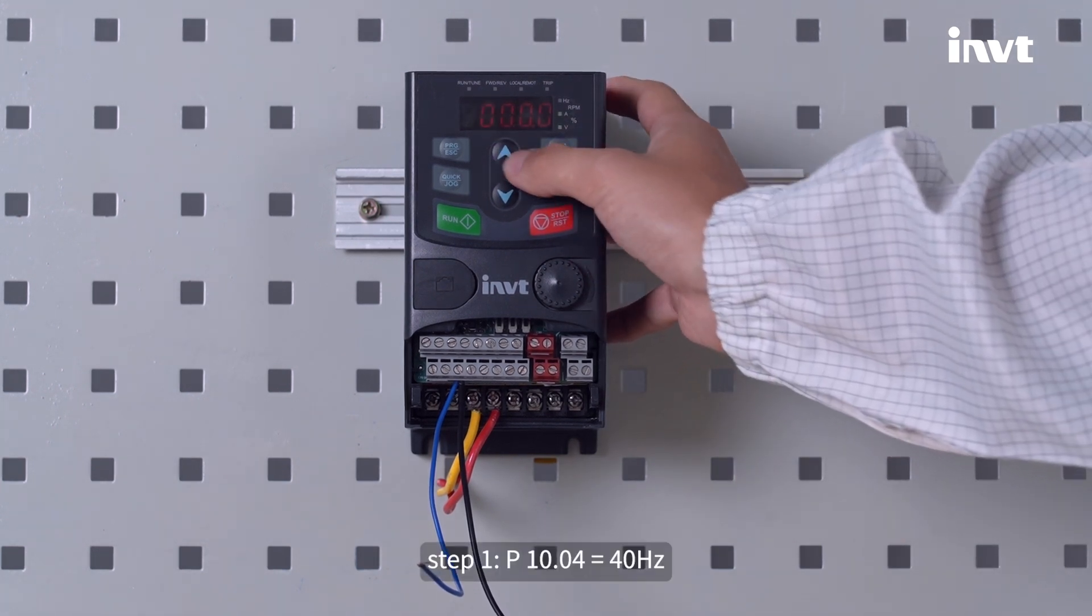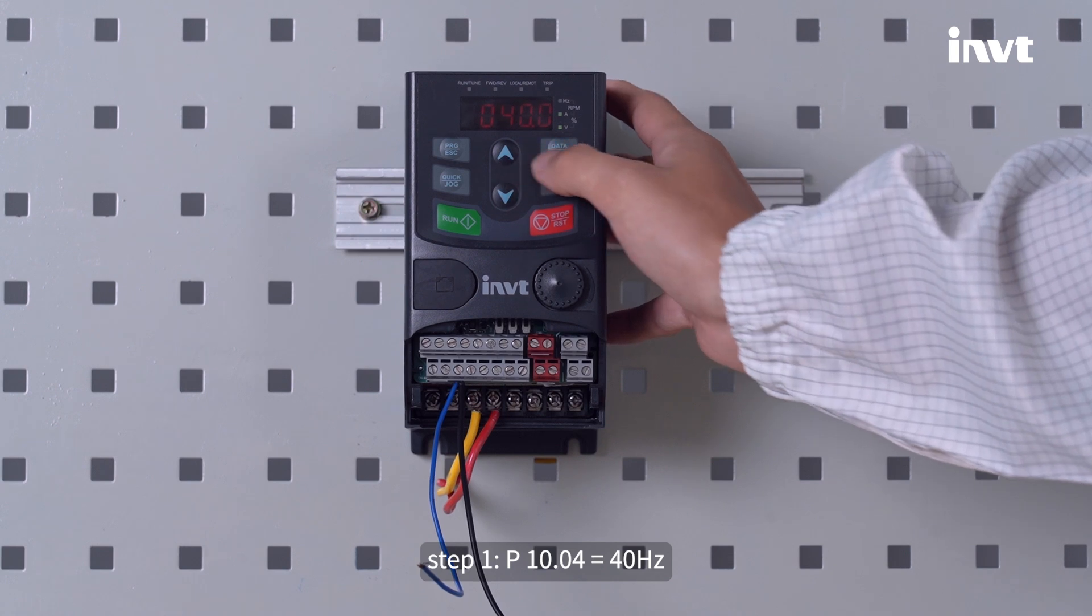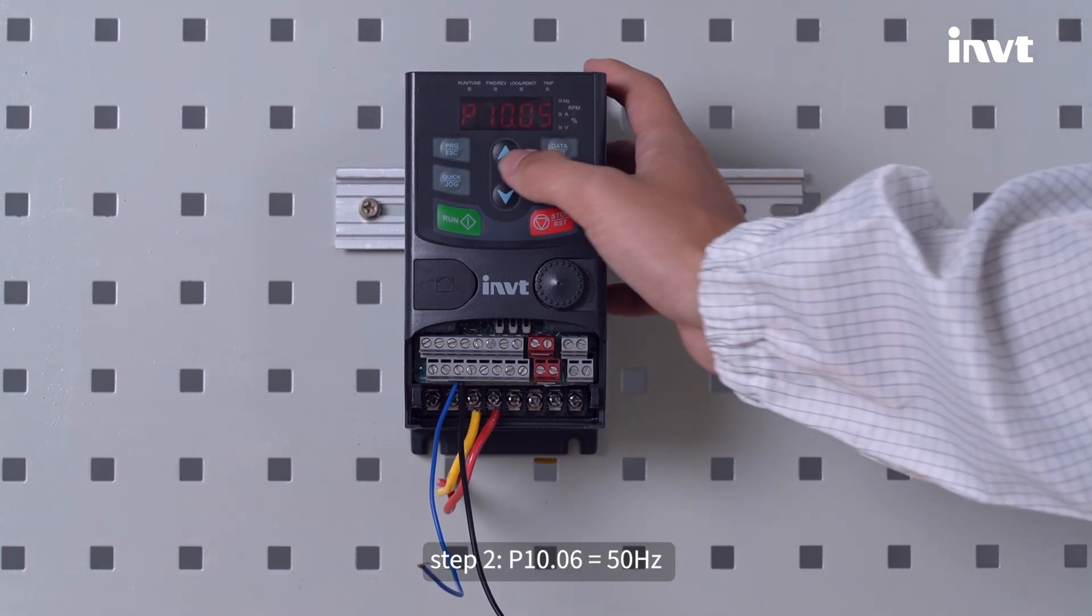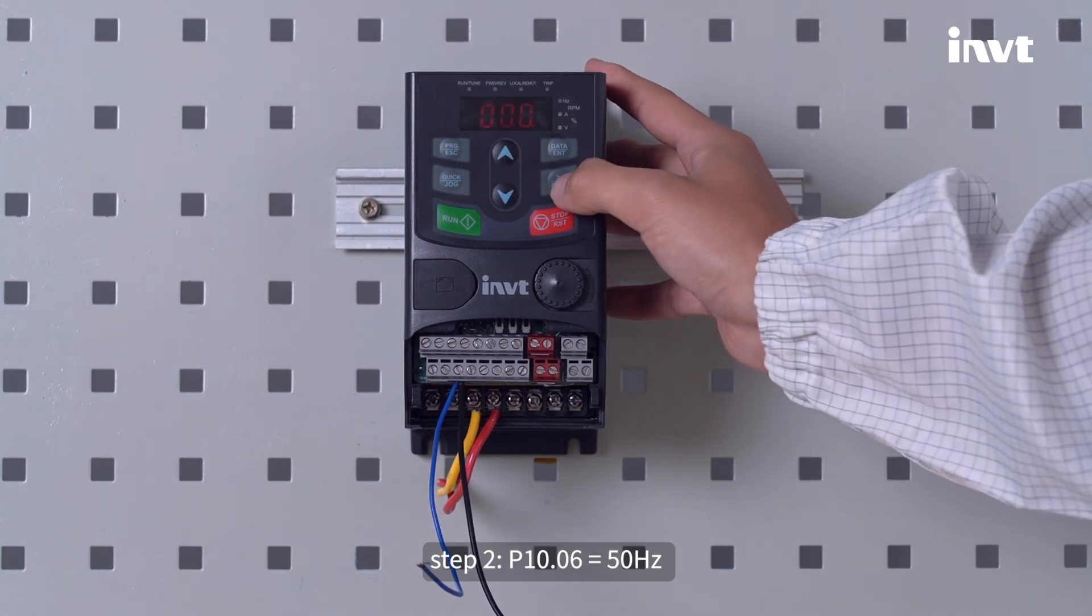Step 1: P10.04 equals 40 Hertz. Step 2: P10.06 equals 50 Hertz.